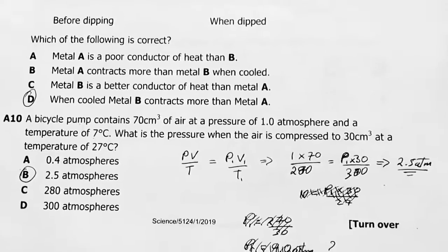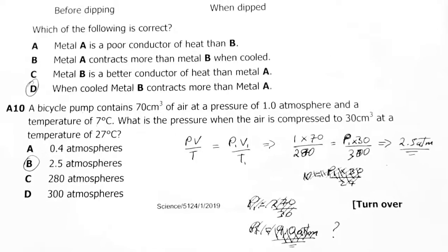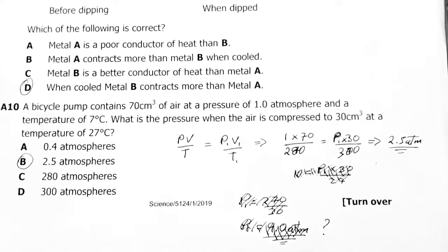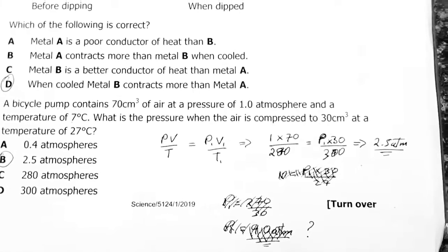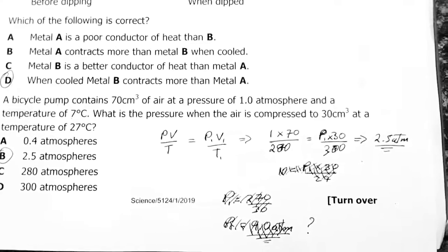Number 10: A bicycle pump contains 70 cubic centimeters of air at a pressure of 1 atmosphere and temperature of 7 degrees. What is the pressure when the air is compressed to 30 cubic centimeters at a temperature of 27 degrees Celsius?